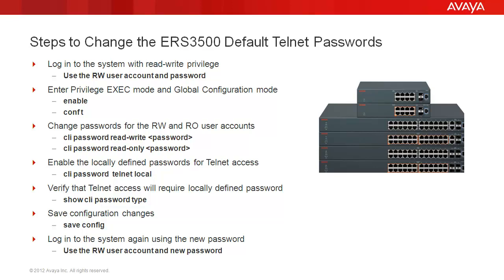Then we will enable the locally defined passwords for Telnet access by using the command CLIPassword telnetlocal. Then we will verify the Telnet access will require locally defined password by using the command show CLIPassword type. Then we save the configuration using save config. After that we will log back into the system with the new password to verify that the new password has taken effect.